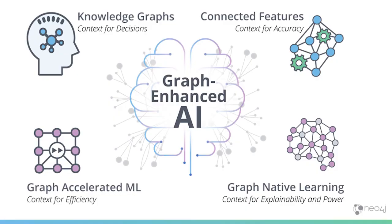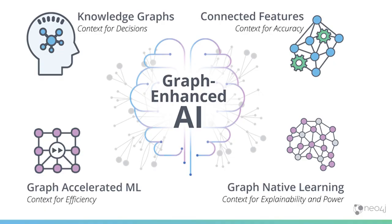On the more technical side, you have connected features, where you use the graph to create new features to feed into your machine learning pipeline and make better predictions — and that's really going to be the focus of this talk. And finally, as a future direction, you have graph native learning, or graph neural networks, where you learn natively within the graph: a graph is your input, you make predictions about changes in graph structure, and your output is an updated graph.